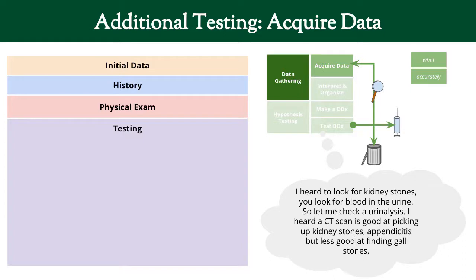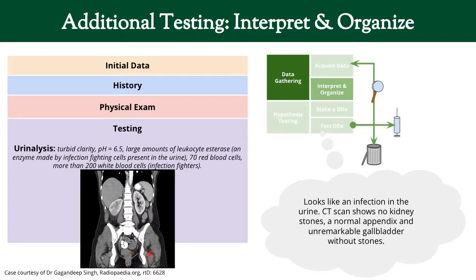What do we want to do for testing? For kidney stones, blood in the urine is expected, so let's send off a urine test. A CT scan is good for picking up kidney stones, and it can also show appendicitis and gallstones. Note that we order tests based on what we're thinking about — we never order tests randomly. We order them to either confirm if we want to rule something in, or refute something if we want to rule something out.